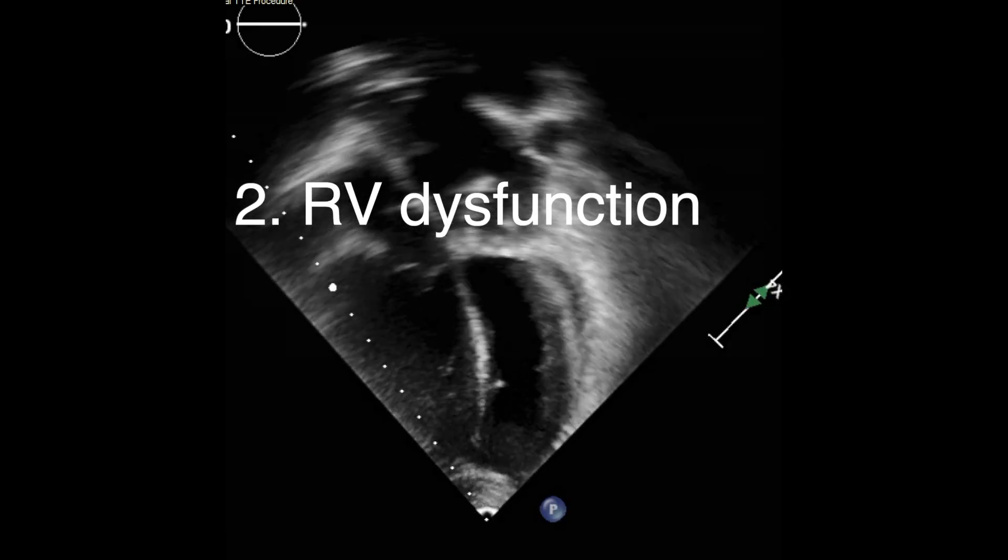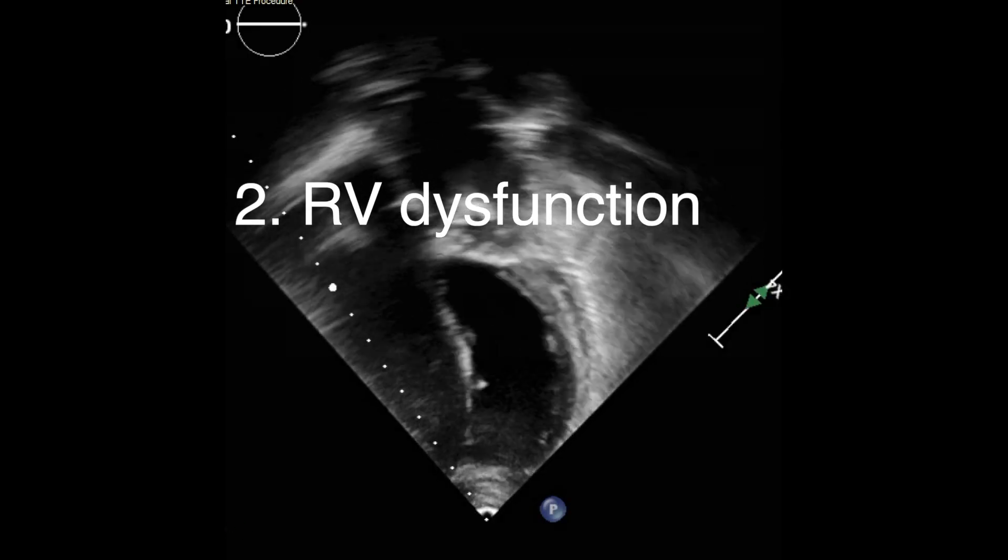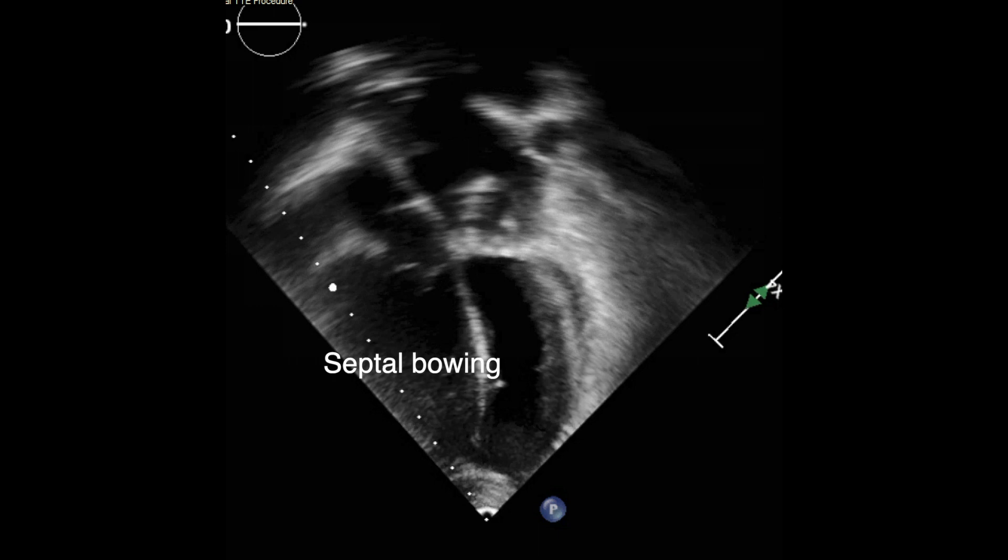Number 2. Right ventricular dysfunction. Then the decreased preload and increased afterload to the RV matter.